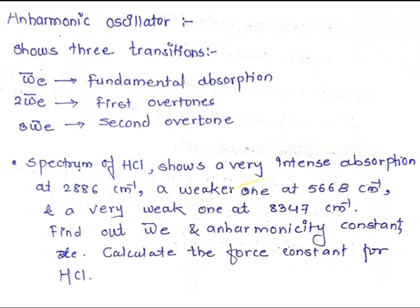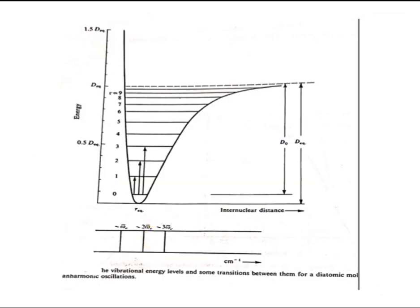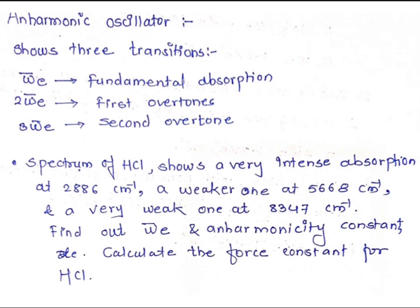The transition at ω̄e is called fundamental absorption, the transition at ~2ω̄e is called the first overtone, and the transition at ~3ω̄e is the second overtone. After these three transitions, further transitions exist but their population is very low and negligible compared to the ground, first, second, and third excited states.